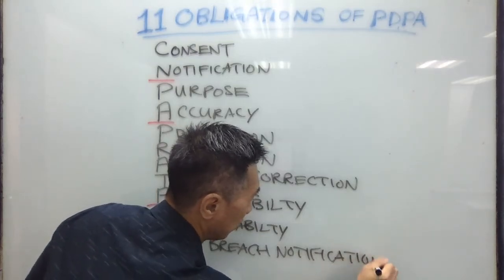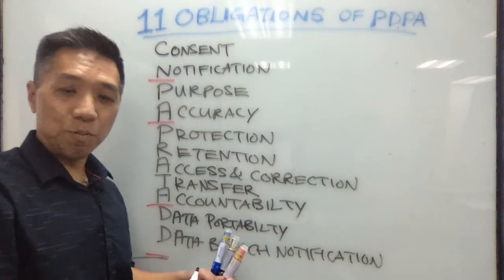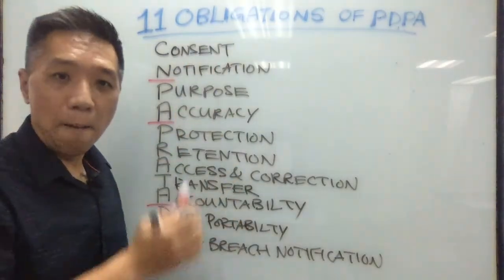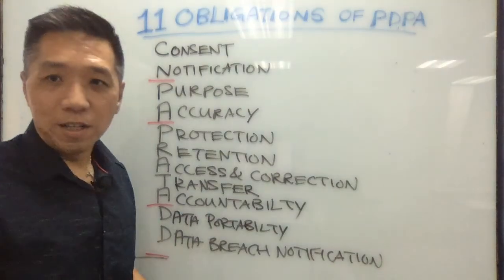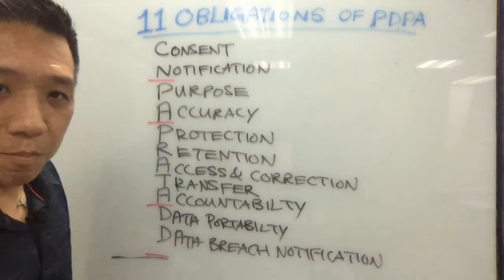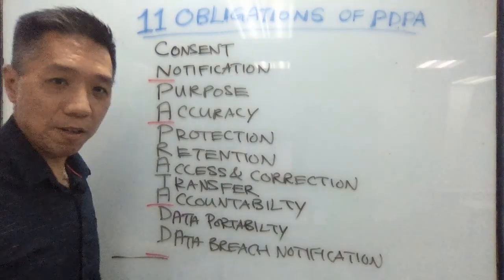I hope this abbreviation C-N-P-A-P-R-A-T-A-D-D will help you remember the 11 obligations of PDPA better. It is actually ordered this way for a very important purpose, because the first four obligations are really important for the collection phase. If you are collecting data, you want to be very careful and take special precautions to apply these four obligations: consent, notification, purpose, and accuracy.